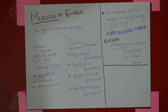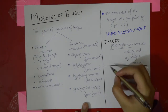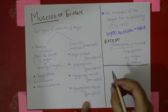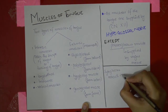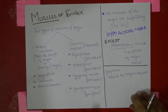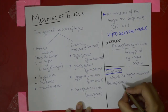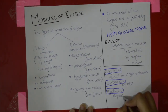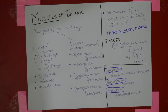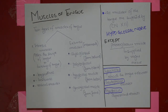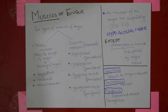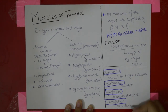One more thing — the movements of these muscles are very important for your exams. Styloglossus retracts and also elevates the tongue. Palatoglossus elevates the tongue. The genioglossus — the safety muscle of the tongue — protrudes the tongue.